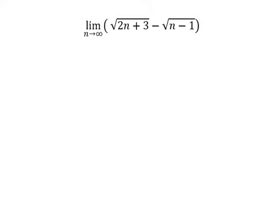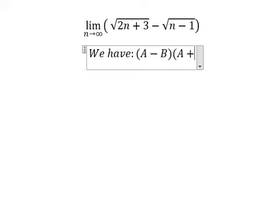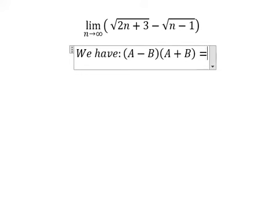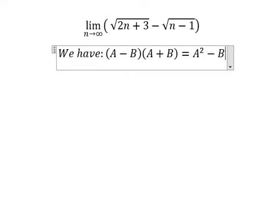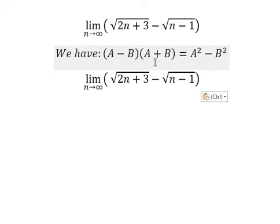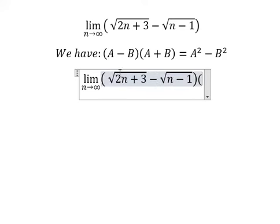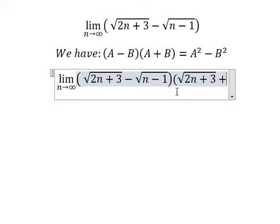So we need to apply the formula here: we have a minus b, multiplied by a plus b, which gives a squared minus b squared. So we need to multiply by a plus b. Here a is this expression and b is this expression. So we need to multiply by the square root of 2n plus 3, plus the square root of n minus 1.